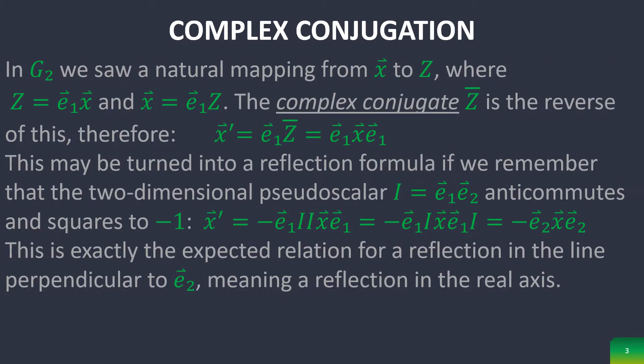In planar geometric algebra, we saw a natural mapping from the vector x to the complex number z with the following equalities. The complex conjugate of z is the reverse of this, meaning that the x prime vector is equal to that.